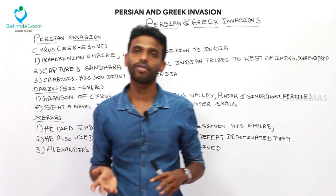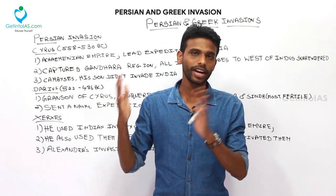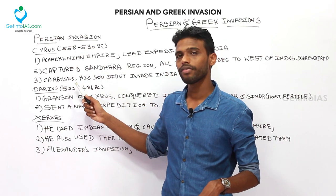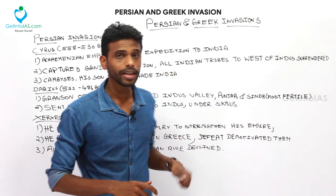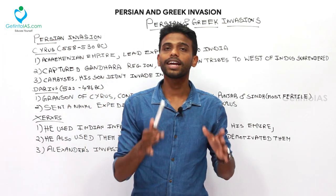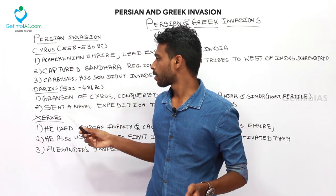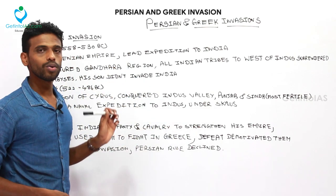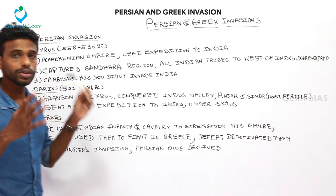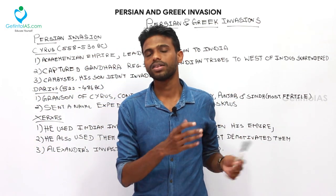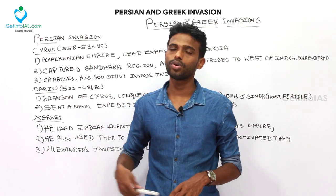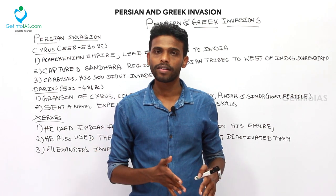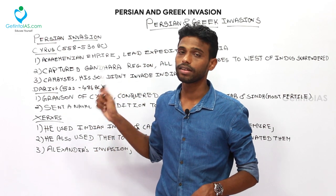Cambyses, Cyrus's son, was different from his father and his own son — he did not invade India. His son Darius — also Cambyses's son and Cyrus's grandson — ruled from 522 to 486 BC. He conquered the major provinces of Punjab and Sindh, considered the most fertile territory in his empire. He also sent a naval expedition under Skylax. Xerxes, who dethroned Darius, used Indian infantry and cavalry. Due to Alexander's invasion, the Persian Empire came to its decline.